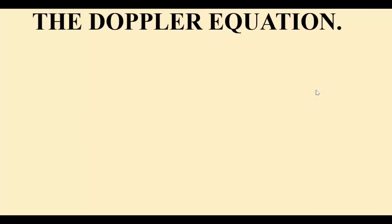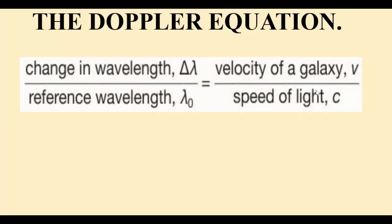The Doppler equation can be written as: change in wavelength over the reference wavelength equals the velocity of the galaxy over the speed of light, which can be written in symbols as shown.